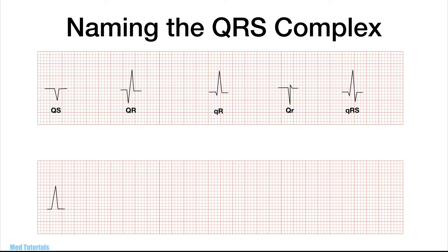If there is only one upward deflection, it is called simply an R wave — note the difference from the QS complex. An upward deflection followed by a downward deflection is labeled capital R, capital S. If the initial positive deflection is small, it is labeled small r, capital S. If there is a second positive deflection after the S wave, it is known as small r, capital S, capital R-prime pattern. Two positive deflections with a negative deflection in between — the classical M pattern — is named capital R, capital S, capital R-prime, commonly called the RSR-prime pattern.